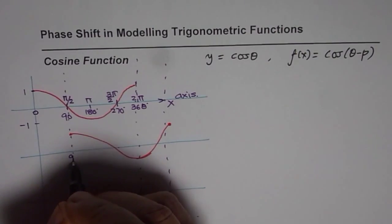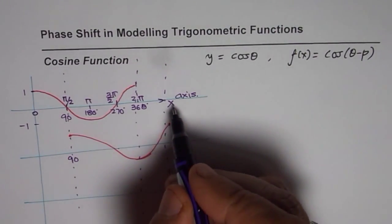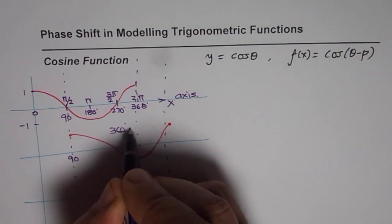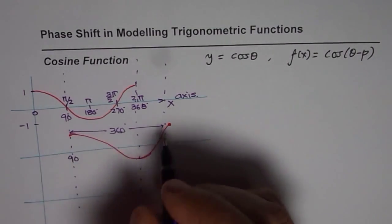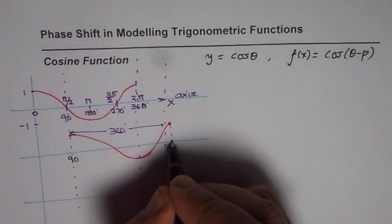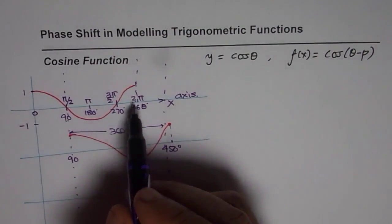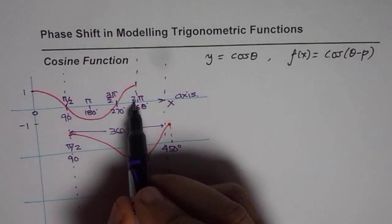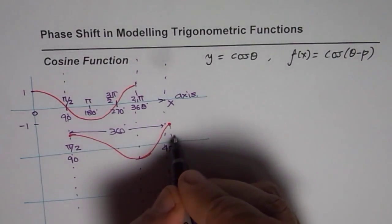The wave actually starts at 90 and it will end at 360 plus 90, since the time period for the wave is still 360 degrees. So 360 plus 90 gives us 450 degrees for this point. In radians, it will be starting at pi by 2 and will end at 2 pi plus pi by 2, or 5 pi by 2.